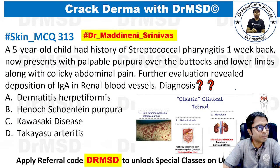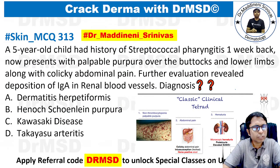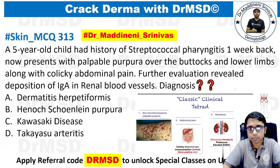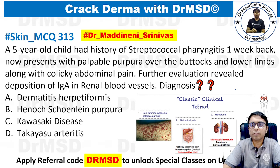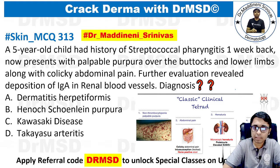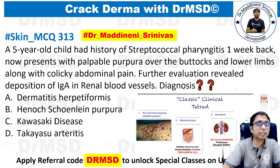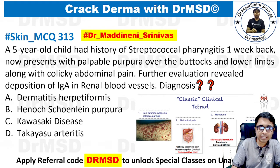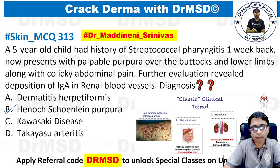This is an MCQ: a 5-year-old child has a history of streptococcal pharyngitis one week back. Now presents with palpable purpura over the buttocks and lower limbs along with abdominal colicky pain. Further evaluation revealed deposition of IgA in the renal blood vessels. What is the diagnosis? If you are thinking Henoch-Schönlein purpura, you have answered it right.